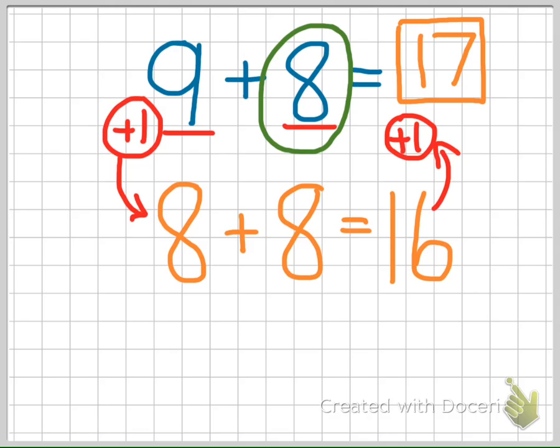But 9 is one larger than 8. And so our sum for 9 plus 8 has to be one larger than the sum of 16. And one larger than 16 is 17. So 9 plus 8 equals 17.